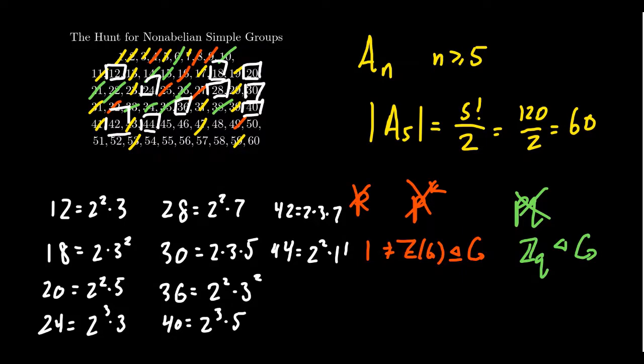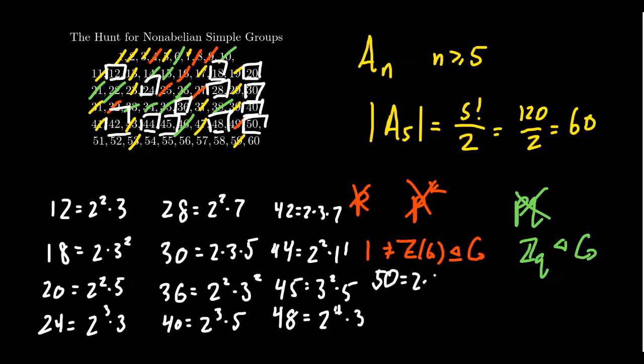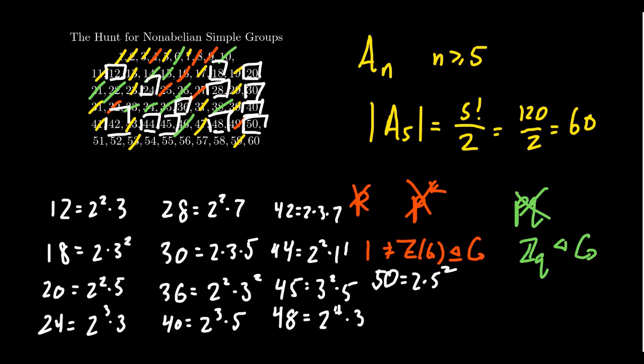Notice the bigger we're getting with our factorizations, the harder it is to cancel them out. 46 is 2 times 23, so we remove it. The other two numbers on this row, we're going to have to keep around. 48 is 2 to the fourth times 3. 50 can be factored as 2 times 25. Looking at the last row, 51 is 3 times 7, so we remove it. 55 is 5 times 11. 57 is 3 times 19, and 58 is 2 times 29.